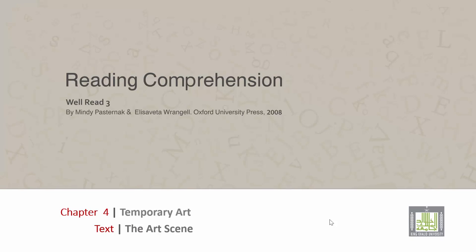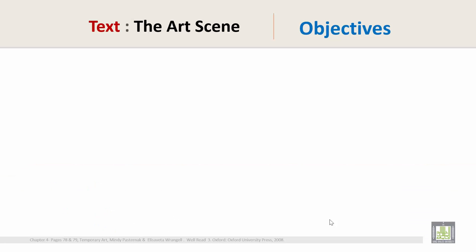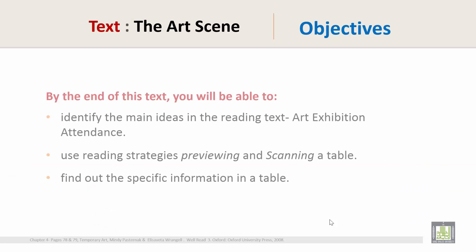Hi everyone, today we are going to start Chapter 4: Temporary Art Text. The art scene objectives: by the end of this text you will be able to identify the main ideas in the reading text 'Art Exhibition Attendance,' use reading strategies of previewing and scanning a table, and find out specific information in a table.